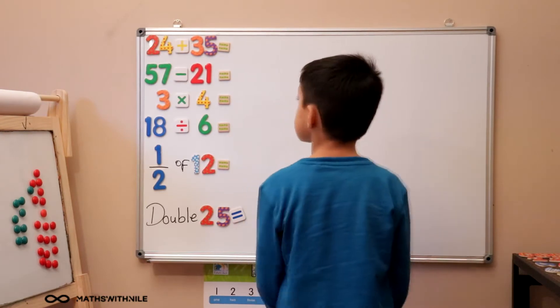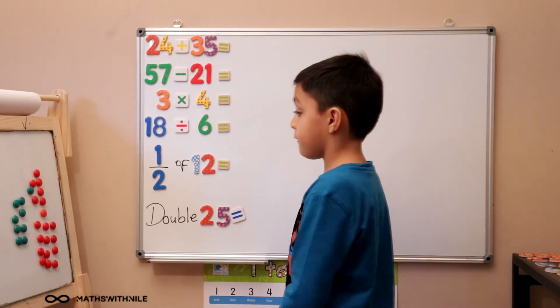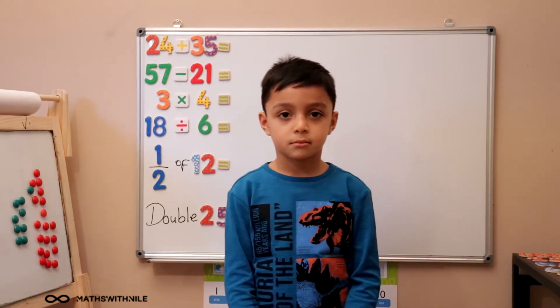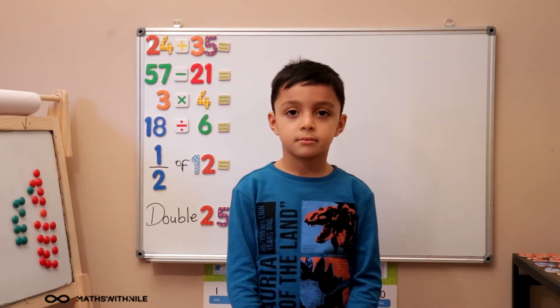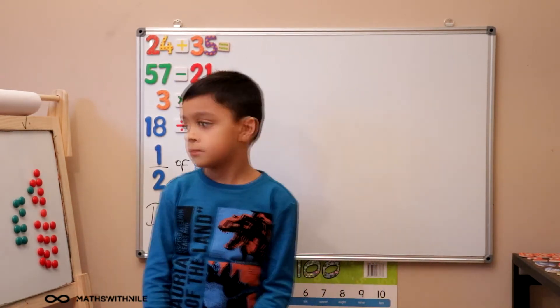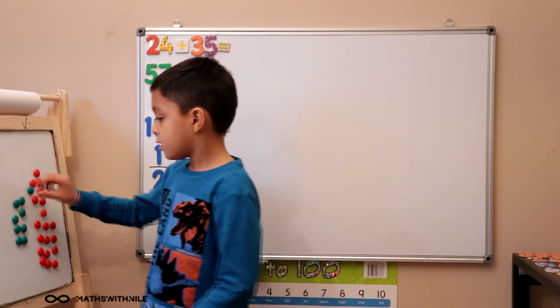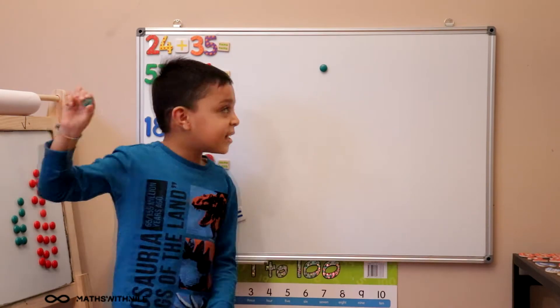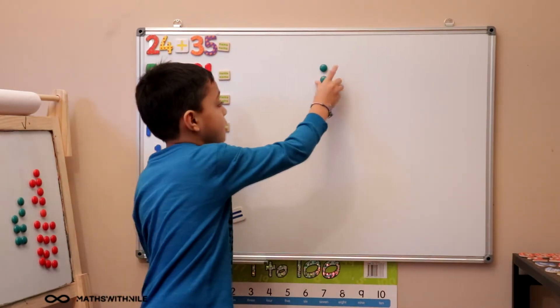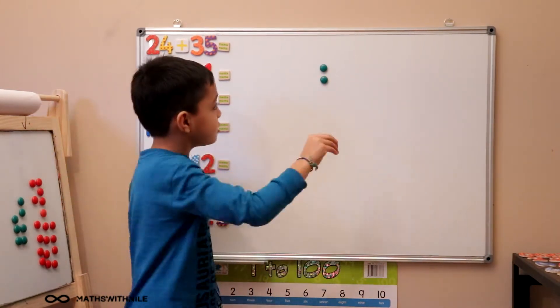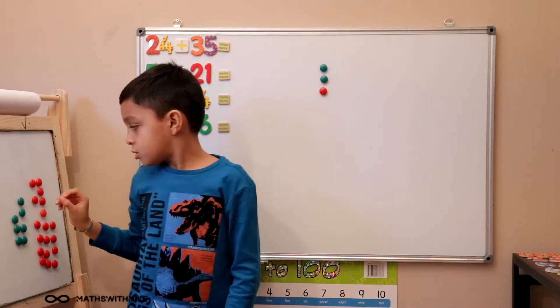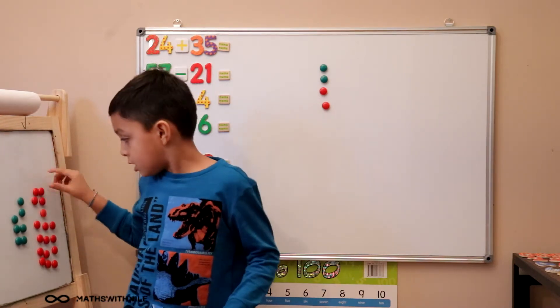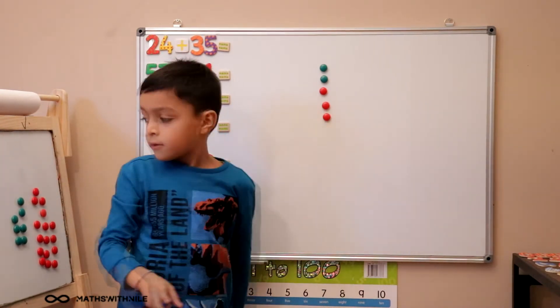Can you tell us the first question on the board please? 24 plus 35. Very good. We're going to use the counters. Can you use the green counters for tens and the red counters for units? And can you stand to the side and put it on the board for us? Start with 24. 10, 20, 1, 2, 3, 4.